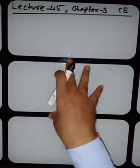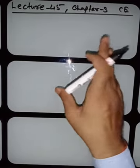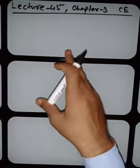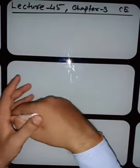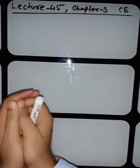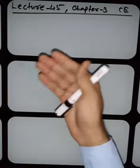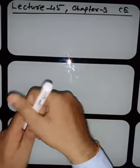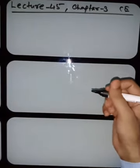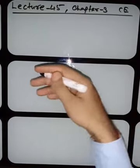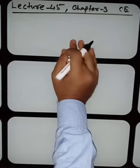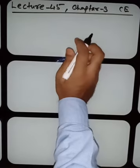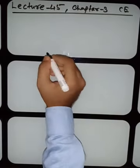Remember, this particular topic you have studied in standard 10 also and it was very interesting. Try to recall that you used to calculate what the electricity bill would be at the rate of 4 rupees if your consumption of electrical power is 10 units or 20 units. Today we will do some questions of our level.